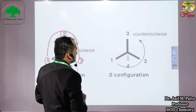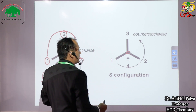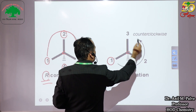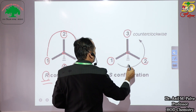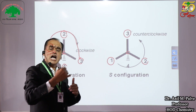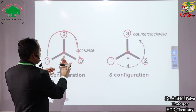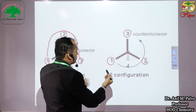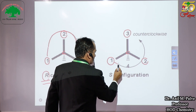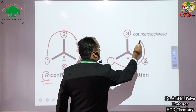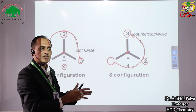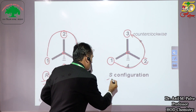Let us look at another example. We have a central carbon atom with four different groups attached. The first, second, and third priority groups are shown, and the fourth priority group is shown by a dashed line, indicating it is away from us when we view the molecule. Tracing from priority 1 to 2 to 3 gives a counterclockwise — anticlockwise — direction. Therefore, such a configuration is known as S configuration.